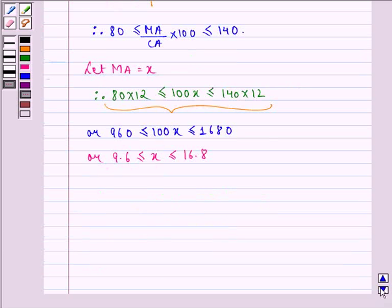Hence, MA should be at least 9.6 but not more than 16.8.